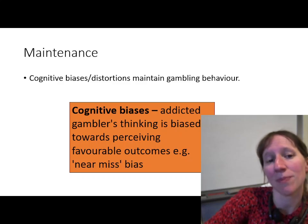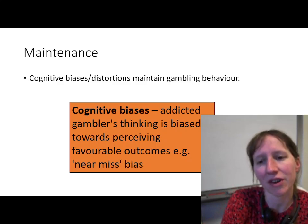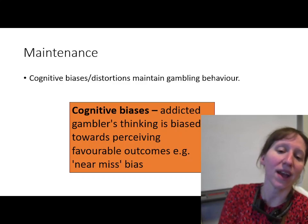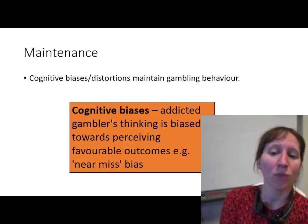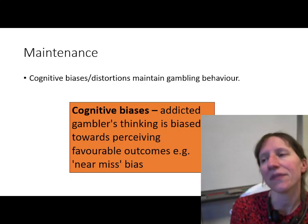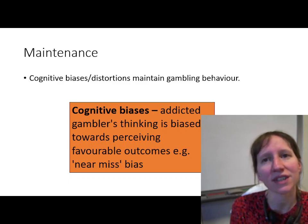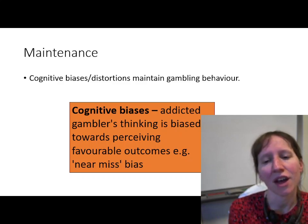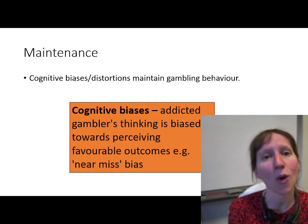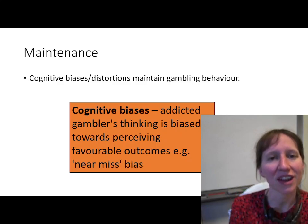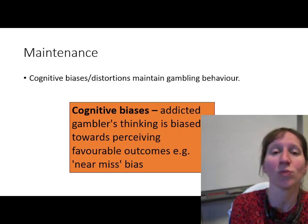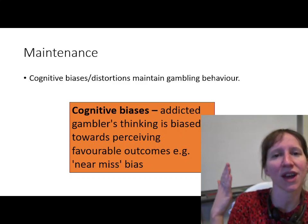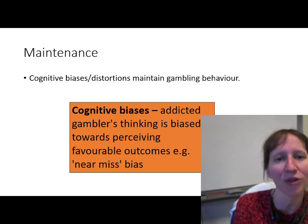A gambling addiction may be maintained through different cognitive biases. One way is via something called a near-miss bias. If your horse comes second in a race, you don't perceive it as a loss — even though you lost your money — but rather as, oh, I nearly won, I was really close. Almost the excitement of being second makes you think of it as having almost been a win. So it's a different way of thinking about it; you're biased towards a favourable outcome, perceiving it as more favourable than it actually was.